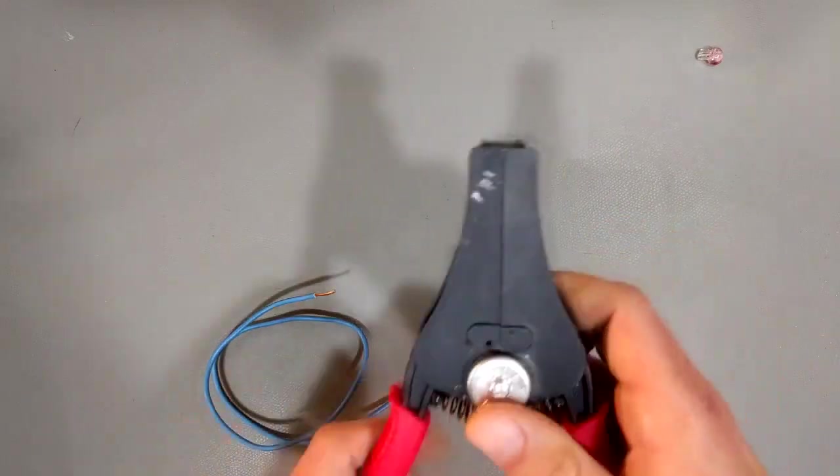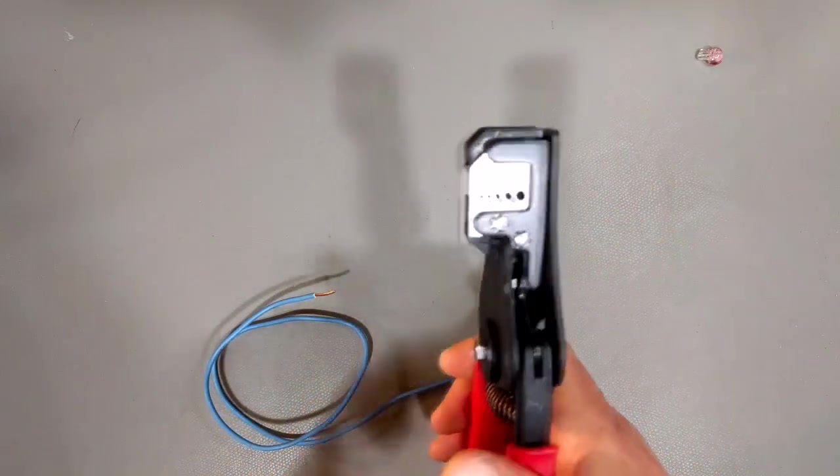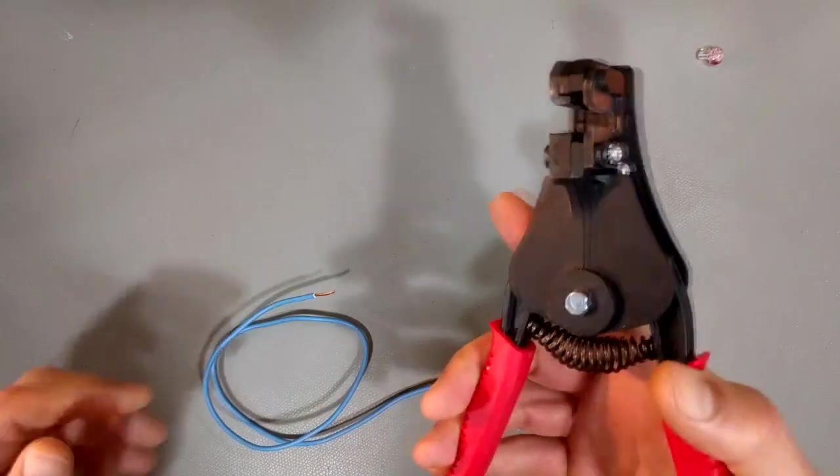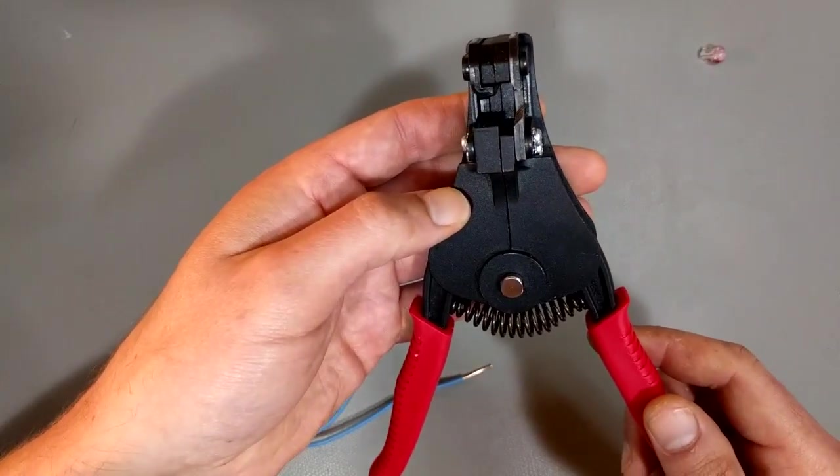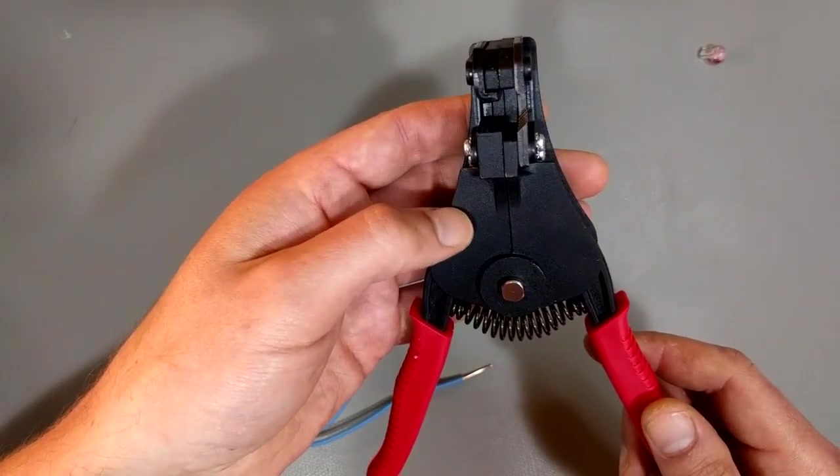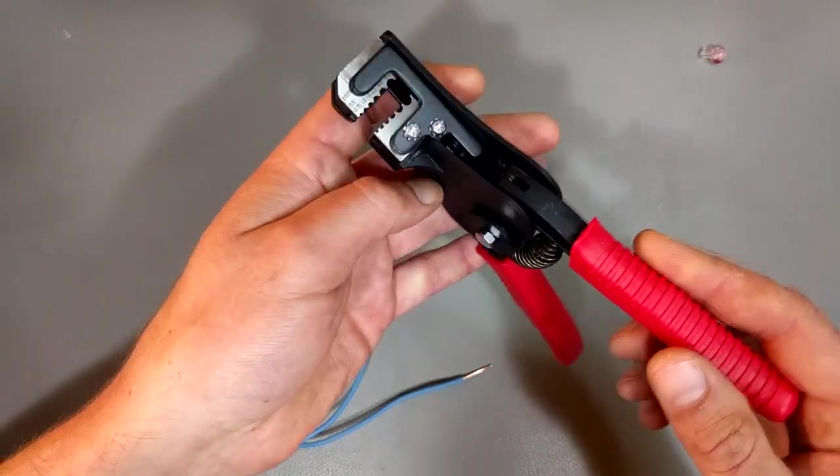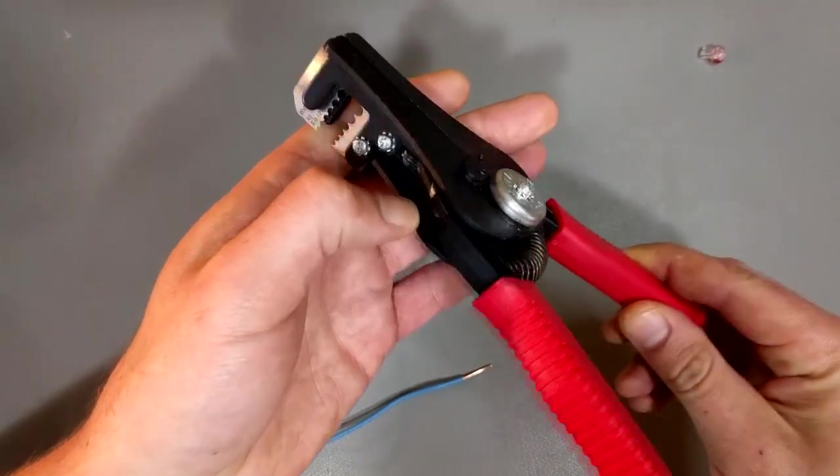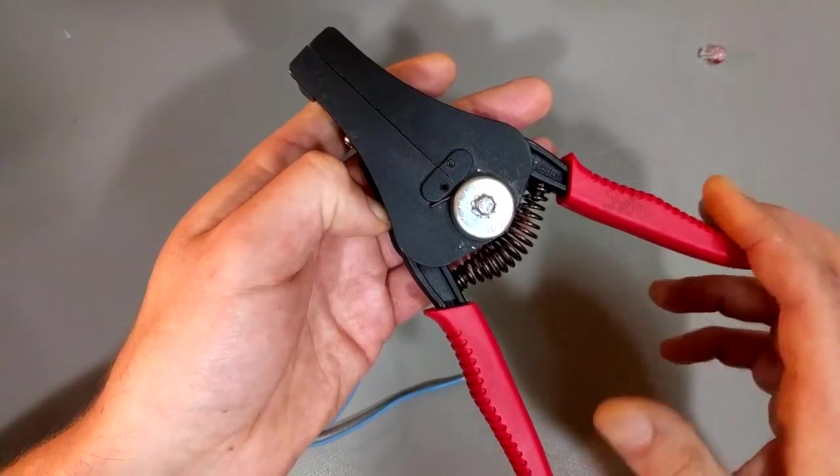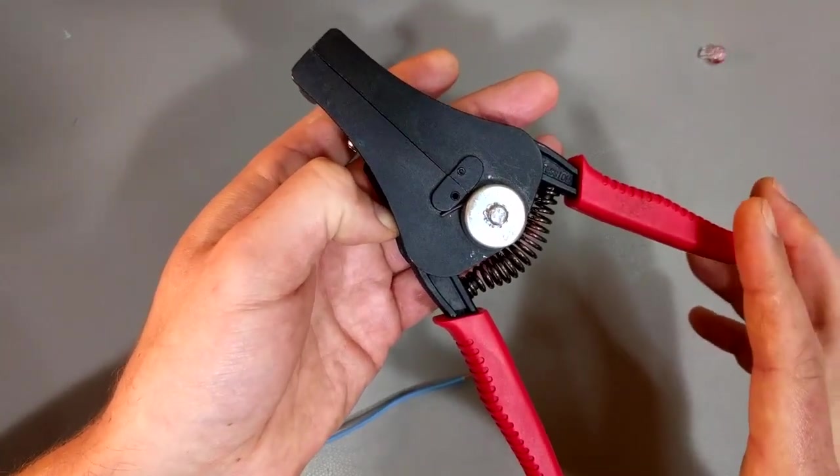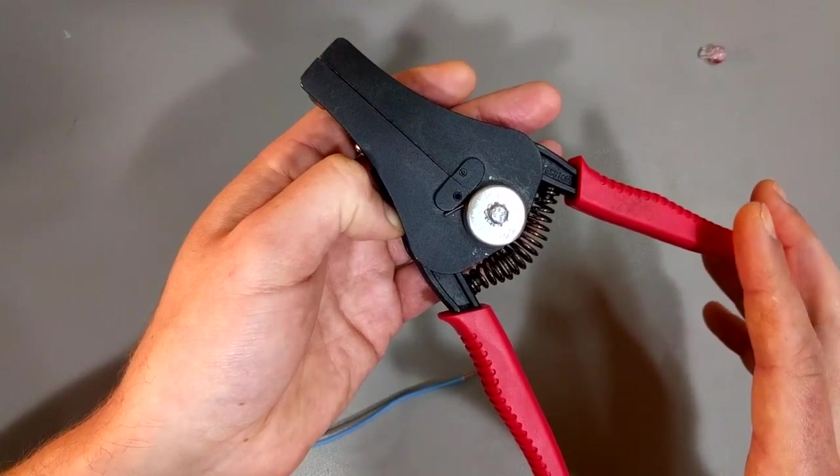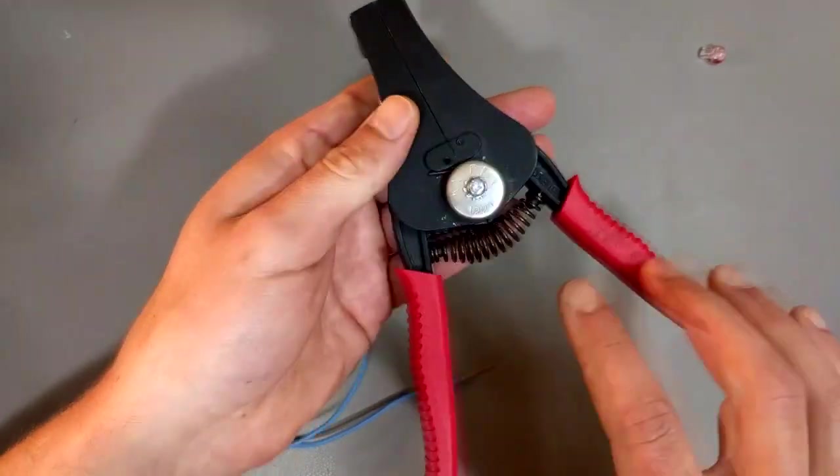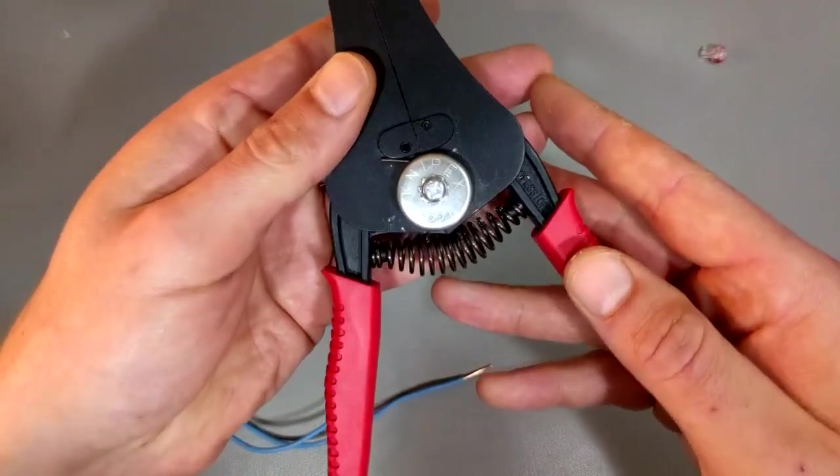So yeah, these are the ones that I prefer for stripping your standard diameter wires. I have another pair that I ordered from a French electrical supply retailer for like 50 euros. They're not cheap and they're actually mostly plastic.